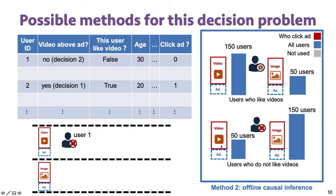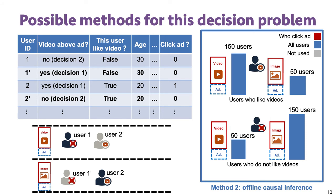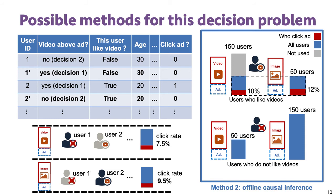Another method is the offline causal inference approach. The basic idea is to do fair comparison — we only compare between users with the same characteristics. For example, for user 1, we find user 1' with the same characteristics but a different decision, like the twin brother of user 1 in the log data. Similarly, we find the twin brother of user 2. If we cannot find the twin brother for some data point, we do not use such data point. Then we calculate the average click rate for the two groups of users. As a graphical illustration, among all the data points, we only use the data points in a dotted rectangle after the pairing process in a causal inference method.